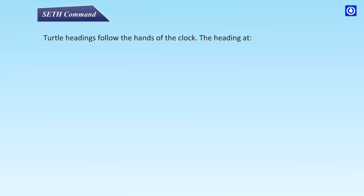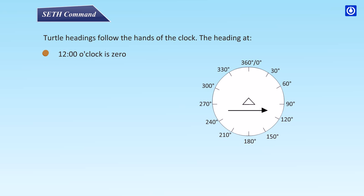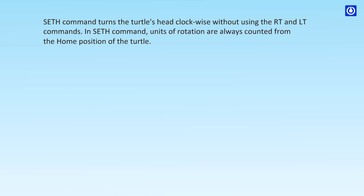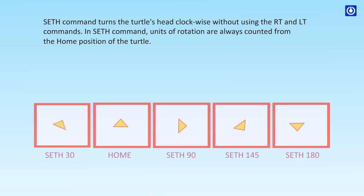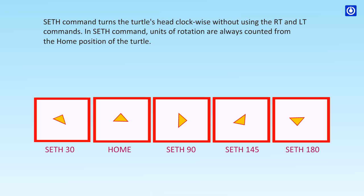Turtle headings follow the hands of the clock: the heading at 12 o'clock is 0, 3 o'clock is 90, 6 o'clock is 180, and 9 o'clock is 270. The seth command turns the turtle's head clockwise without using RT and LT. Units of rotation are always counted from the home position of the turtle — e.g., seth 30, seth 90, seth 145, seth 180.